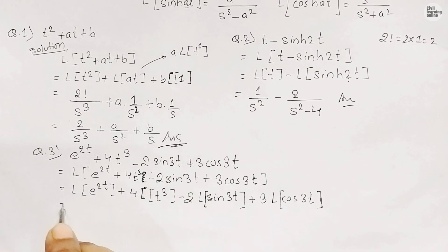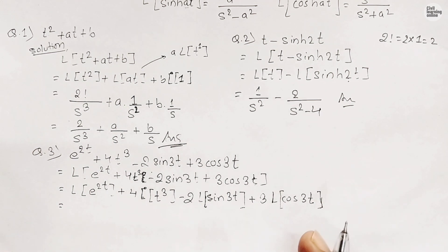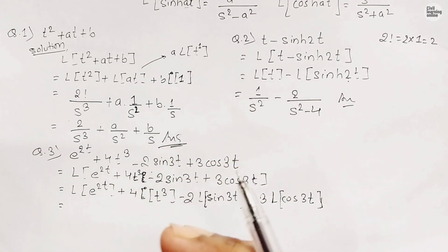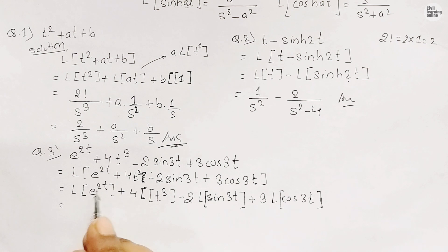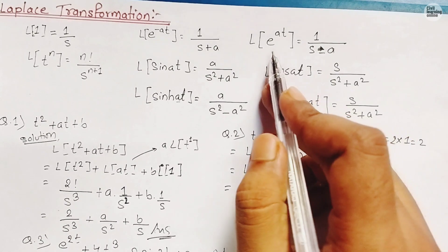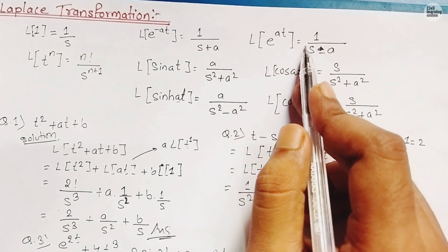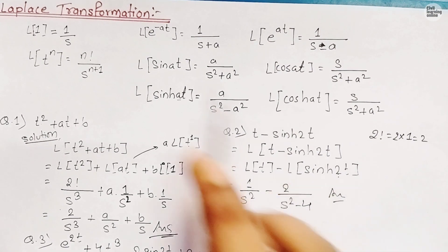Now let's solve it. For L{e^(2t)}, we use the formula L{e^(at)} = 1/(s-a). One helpful tip to remember formulas: for sin(at) the formula is a/(s²+a²), and for cos(at) we replace a in the numerator with s to get s/(s²+a²). These two are very similar.